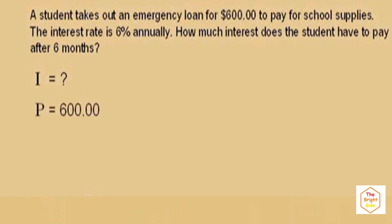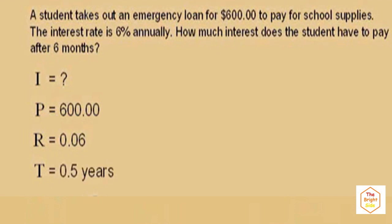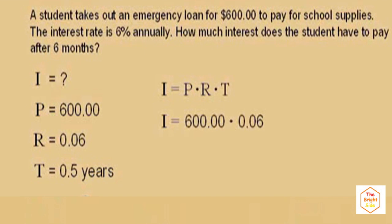The principal is $600. The rate as a decimal is 0.06. The time in years — 6 months is how much of a year? That's right: 0.5 years. Now we use our formula: I equals PRT. Our principal is 600, our rate as a decimal is 0.06, and our time is 0.5 for a half.